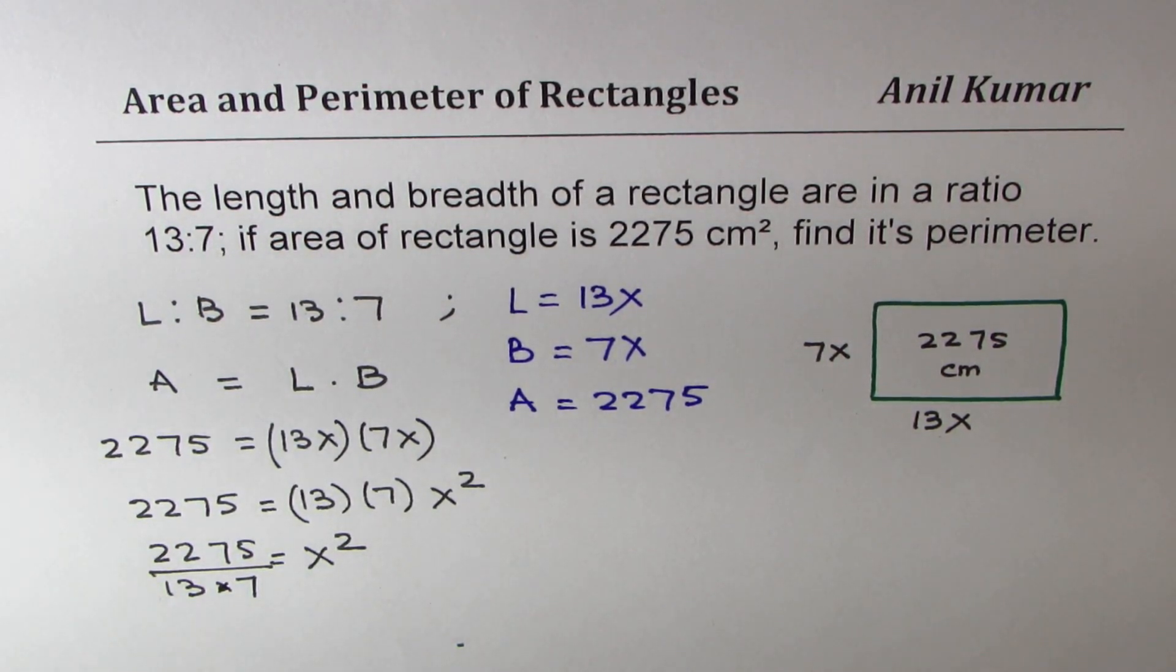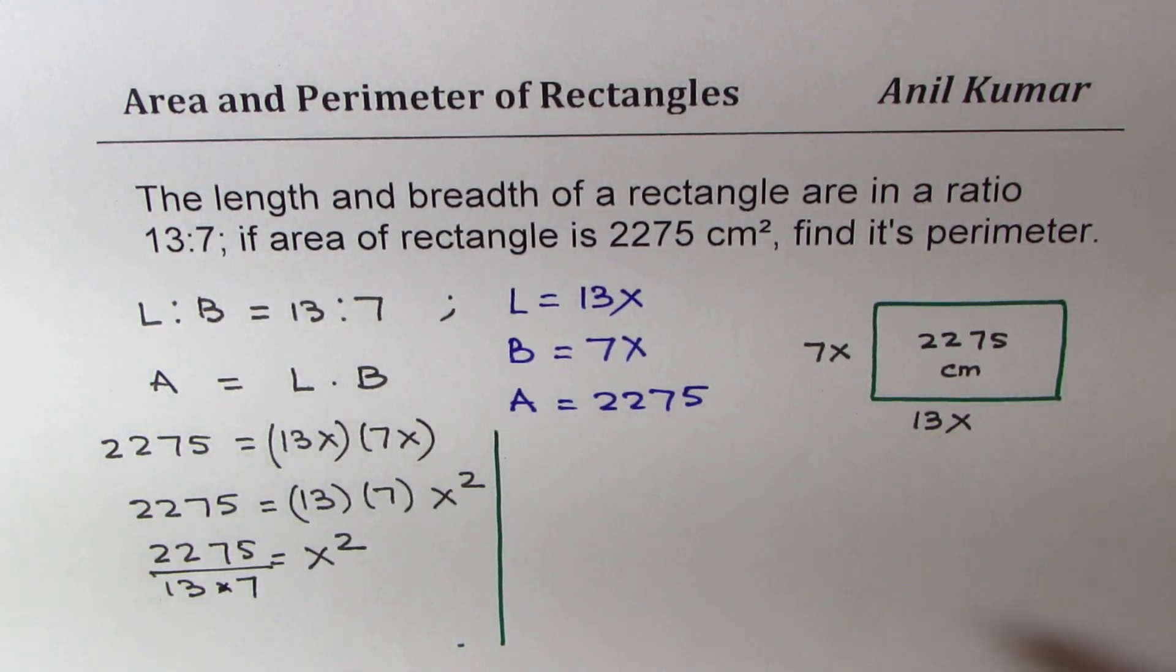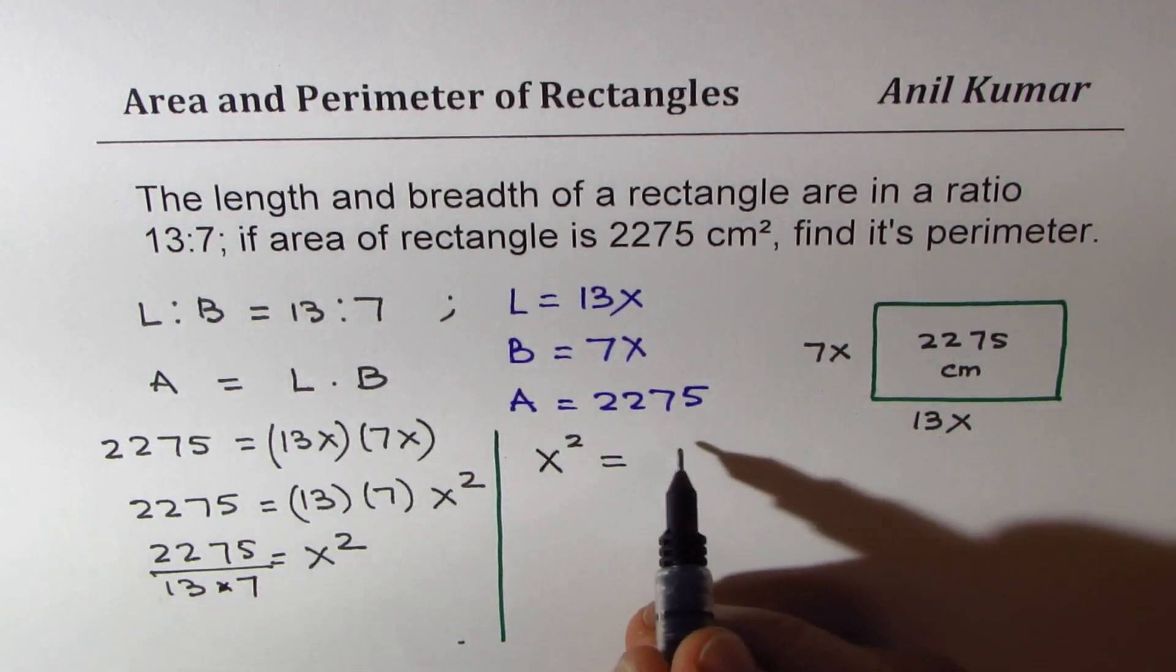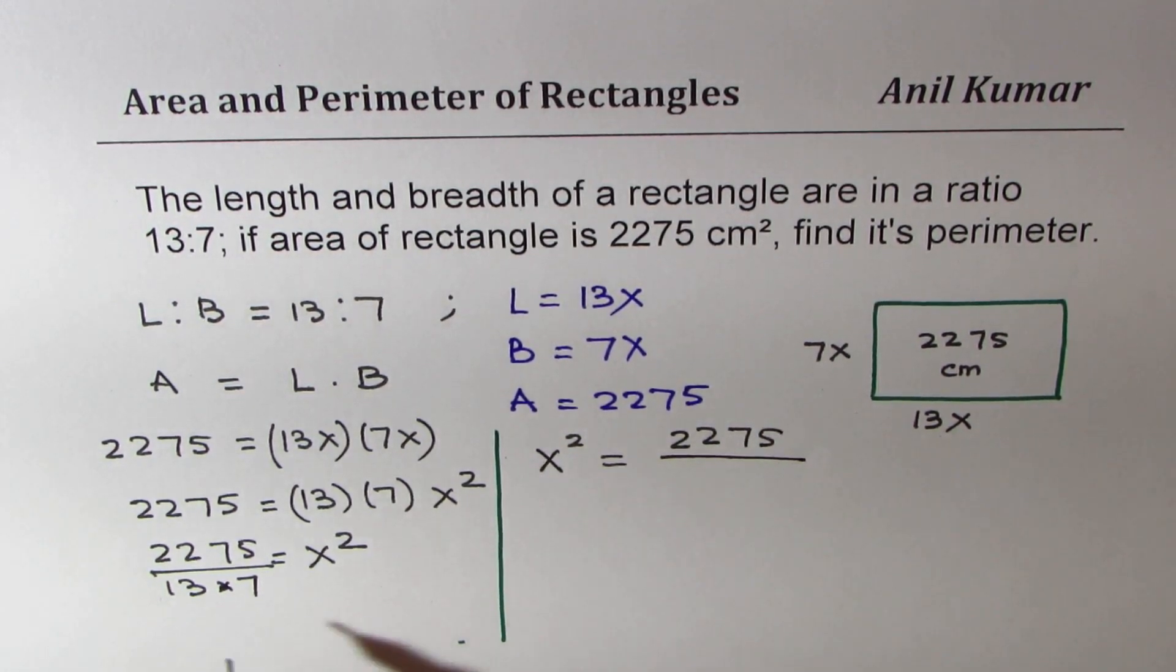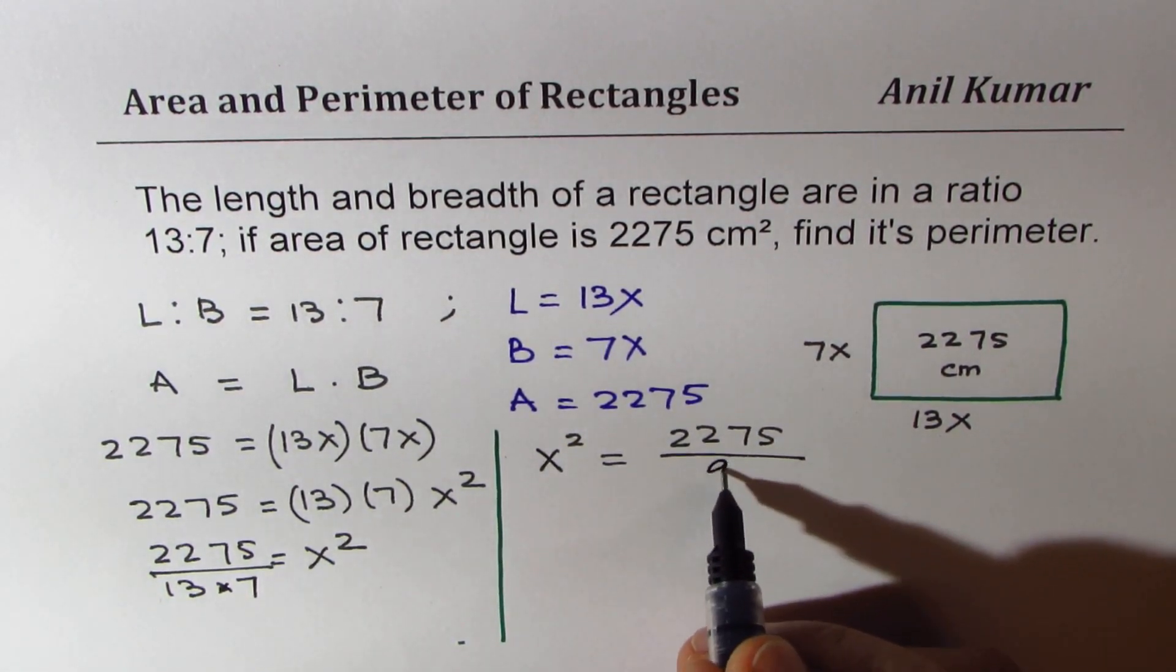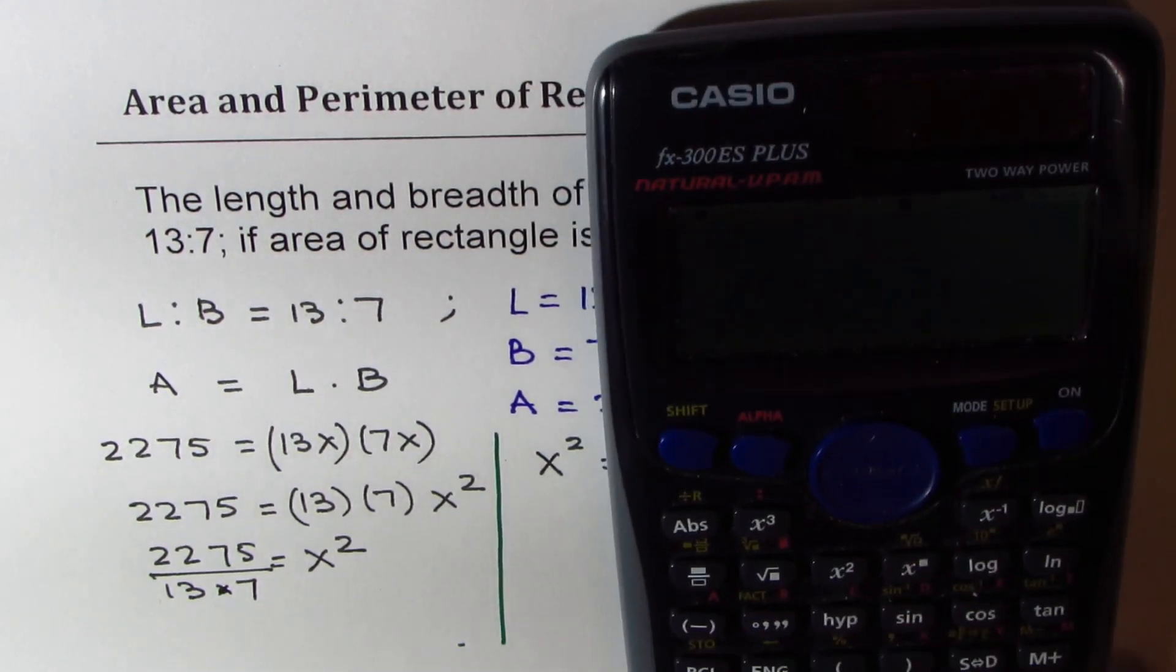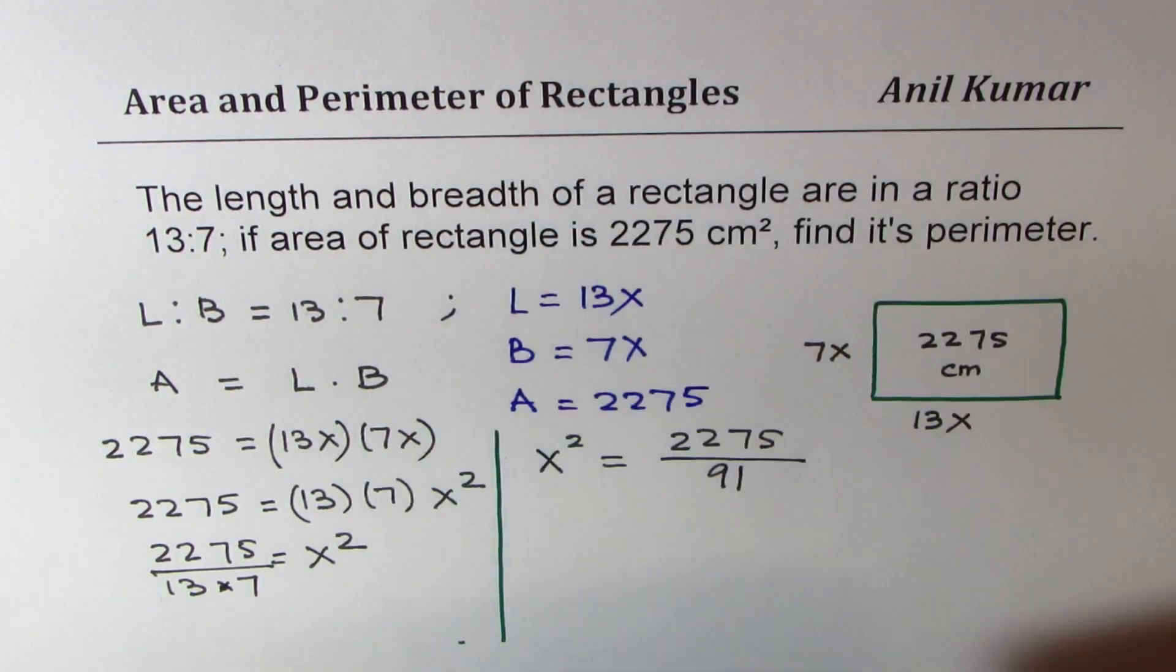So let's use calculator and find this answer. What we have here is basically x squared equals to 2275 divided by 7 times 13, which is 91. So when you use calculator you get 2275 divided by 91 equals to 25.